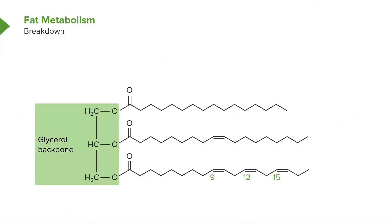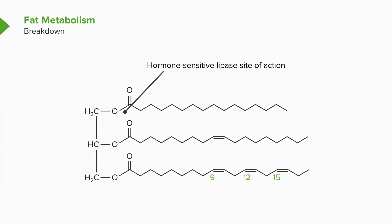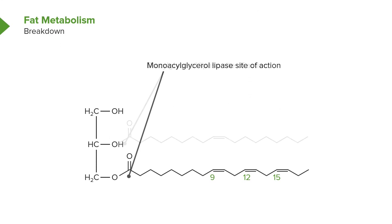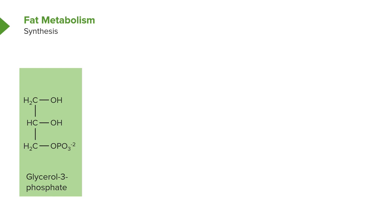You can see on the screen a typical fat molecule. It has a glycerol backbone, as shown here, and you can see ester bonds between all the fatty acids and the glycerol. Each of those individual fatty acids are targets of action of different lipases. The first one shown at the top is a target of an enzyme known as hormone-sensitive lipase, and it will cleave only the first fatty acid. The second fatty acid is cleaved by an enzyme called diacylglycerol lipase. And the third is cleaved off by an enzyme called monoacylglycerol lipase. The product of that is a glycerol molecule and three fatty acids.